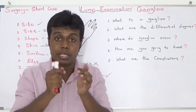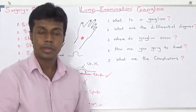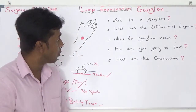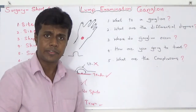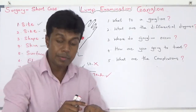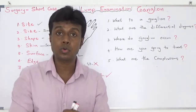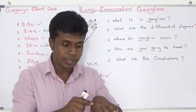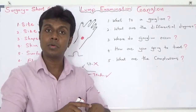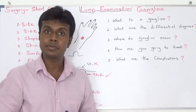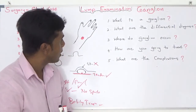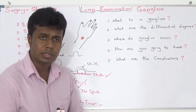What are the differential diagnoses? There can be a bursa, there can be joint cavity protrusion — especially in patients with arthritis — and there can be a dermoid cyst. Those are the differential diagnoses.